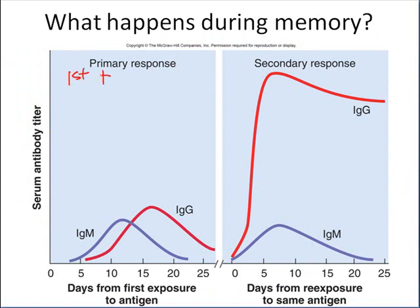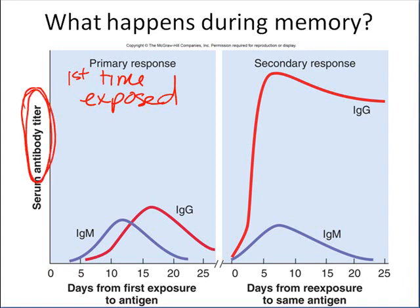In the primary immune response — the first time you're exposed to a particular pathogen — if we measure the antibody titer (the number of antibodies present in blood serum), the titer doesn't even appear until about three days out from infection. That's because of all the complex steps involved in finding the right shaped B cell, the right shaped helper T cell, making clones, and making antibodies. We don't first start producing IgM until about the third or fourth day, followed a few days later by IgG production.